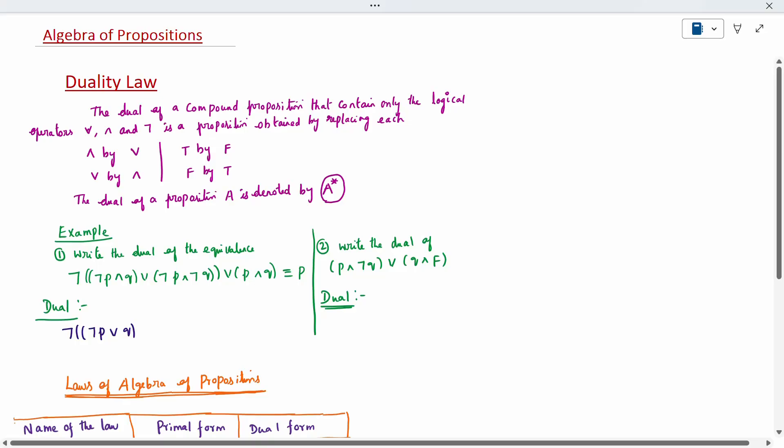Q bracket as it is, instead of disjunction, conjunction. Negation as it is, instead of conjunction, disjunction. I am changing only the symbol. Disjunction to conjunction. Equivalence as it is, p also as it is. This is the dual of the given question.